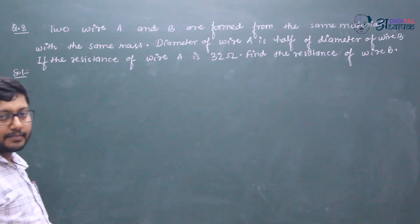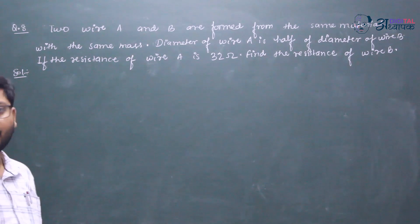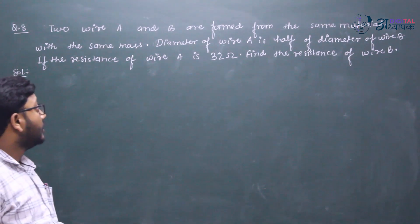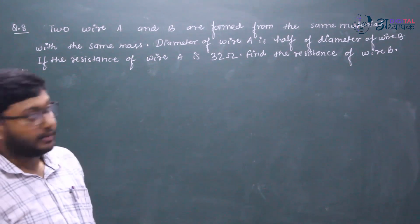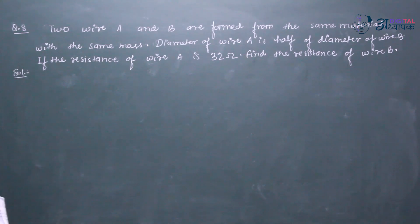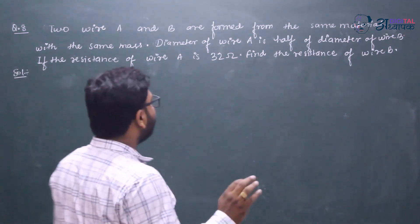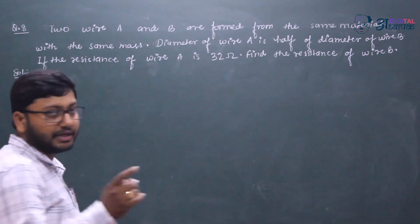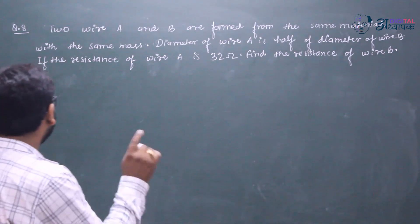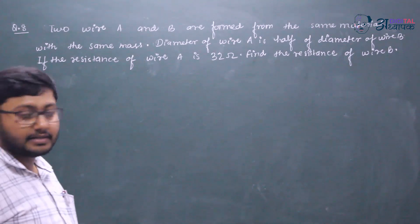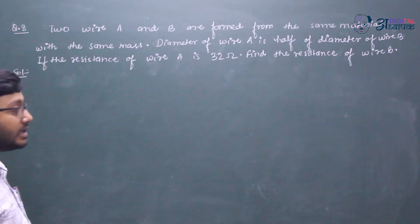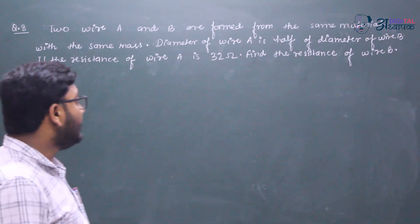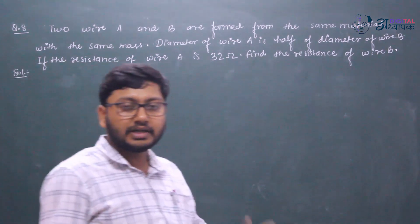Two wires A and B are formed from the same material with the same mass. Diameter of wire A is half of diameter of wire B. If the resistance of wire A is 32 ohm, find the resistance of wire B. Question is clear.